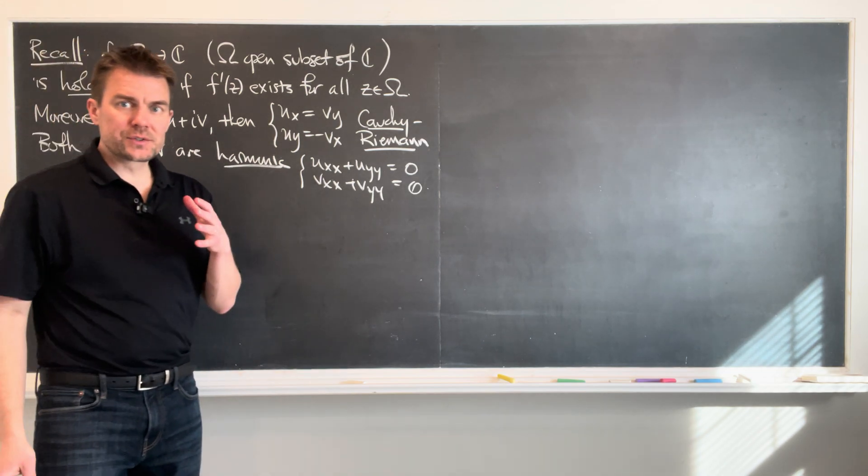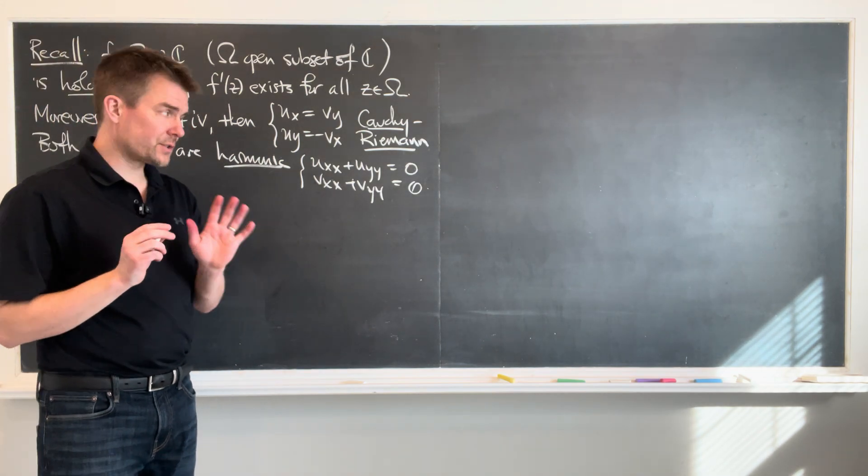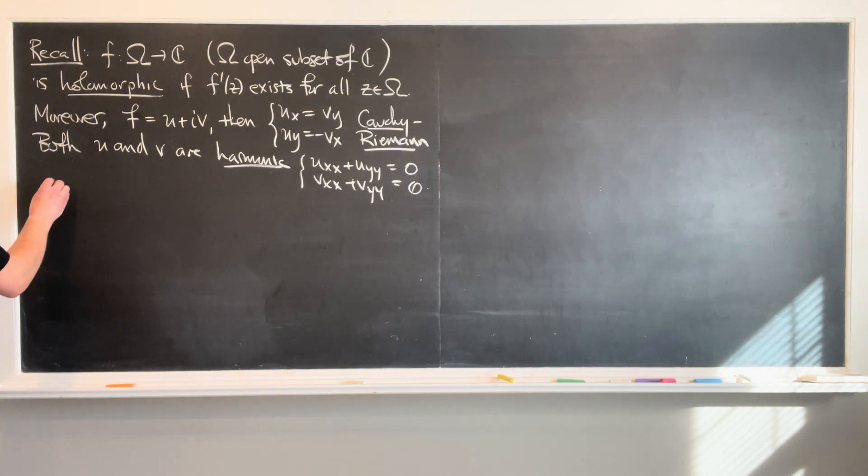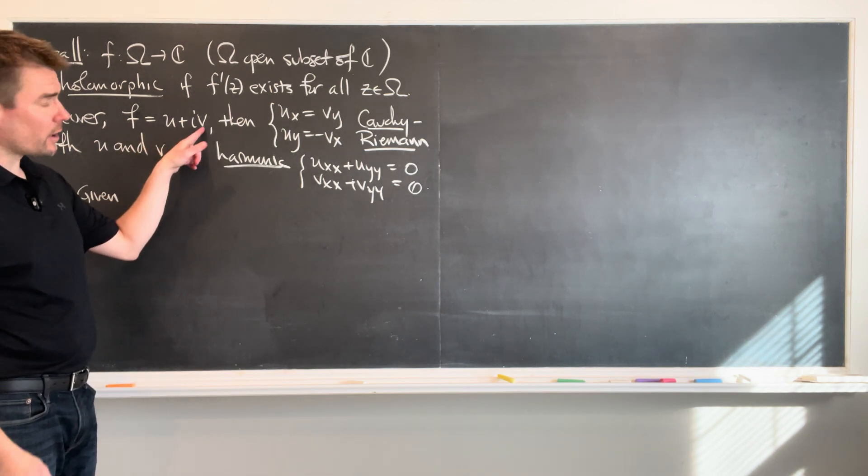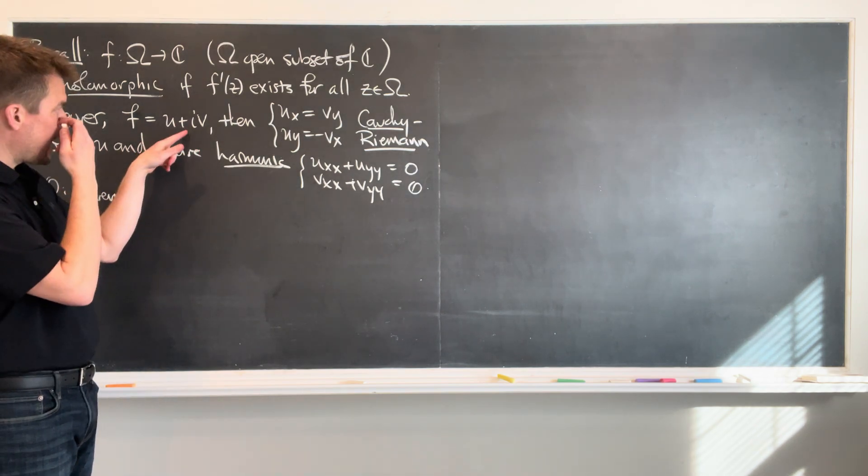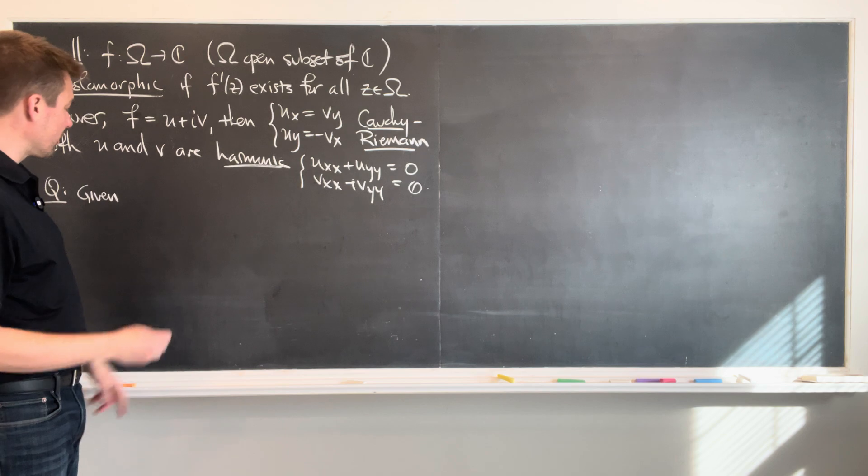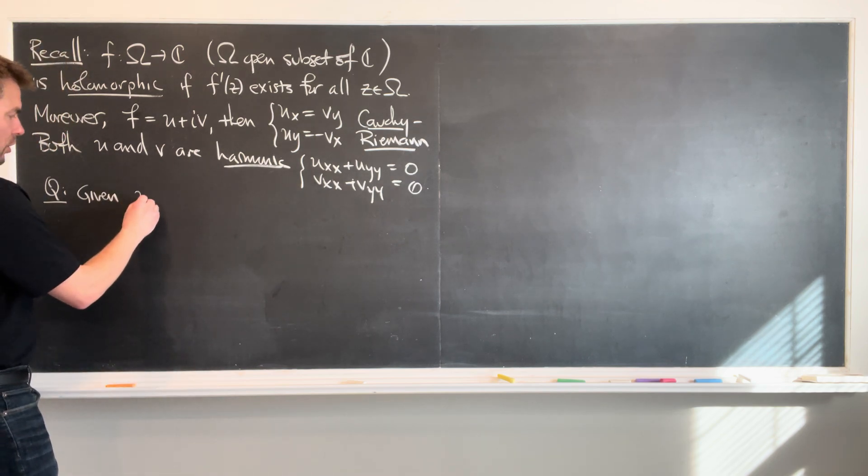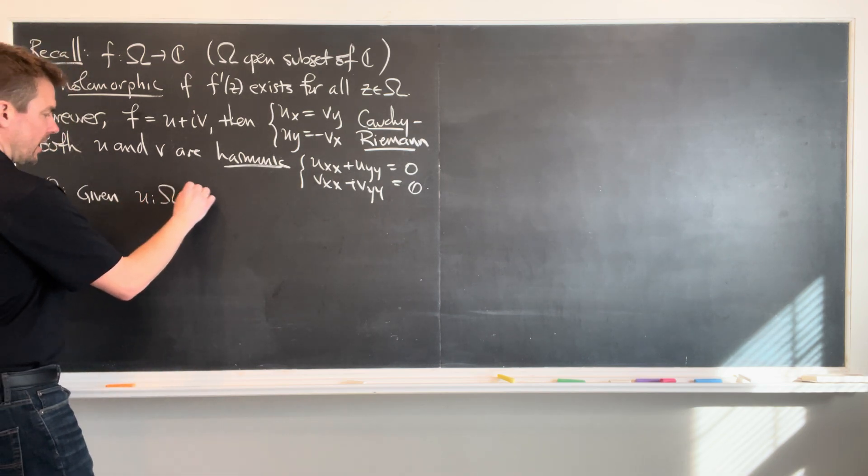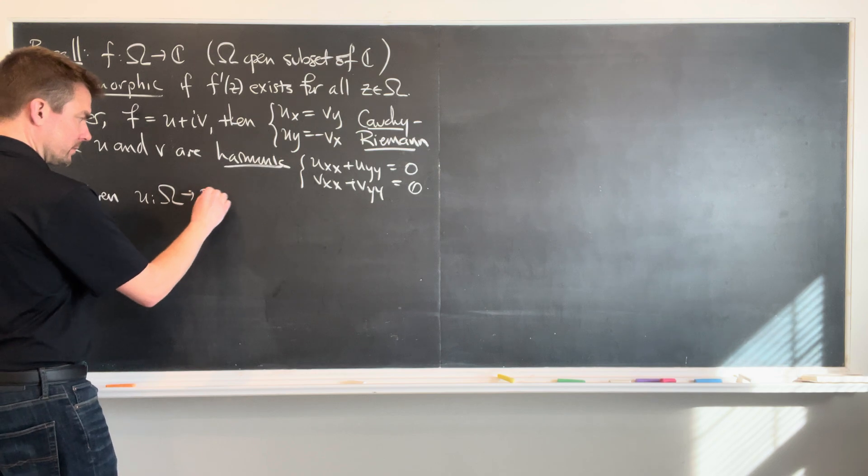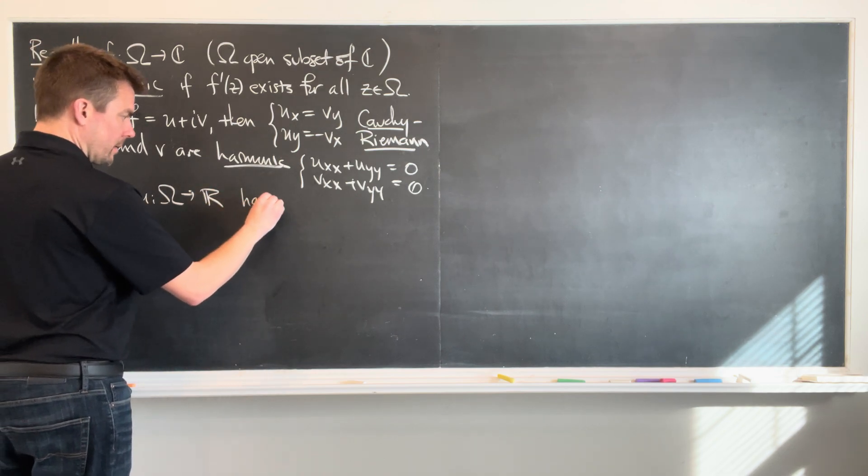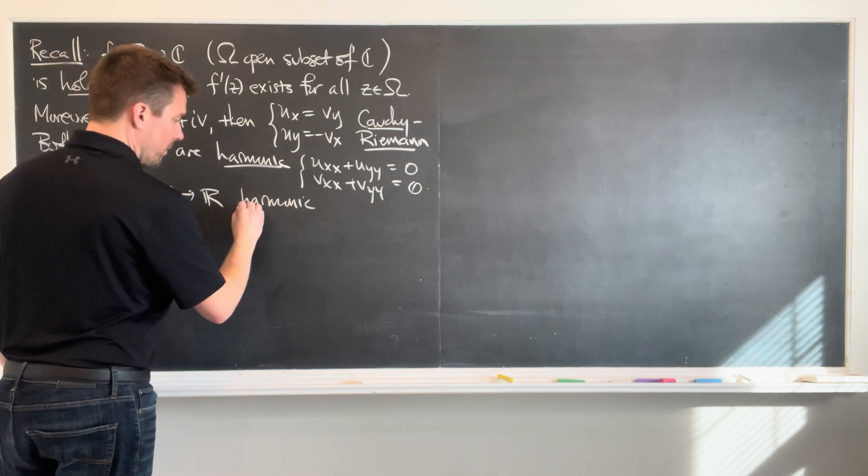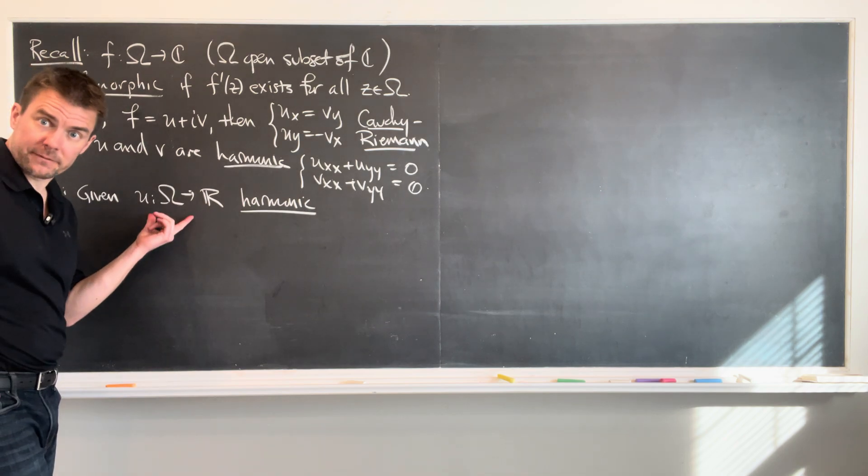And so now what I want to do is I want to focus on harmonic functions for a second. And so here's a question for us. If we're given, and remember also that u and v are both real valued because I have the i out here for the v. So u and v are both real valued.